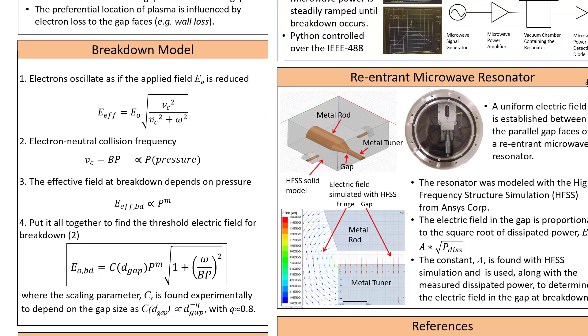The previously published breakdown model begins with the effective electric field inside of an actual electric field E sub 0, colliding with neutrals at a frequency nu sub c, which is linear in pressure with a proportionality constant b.